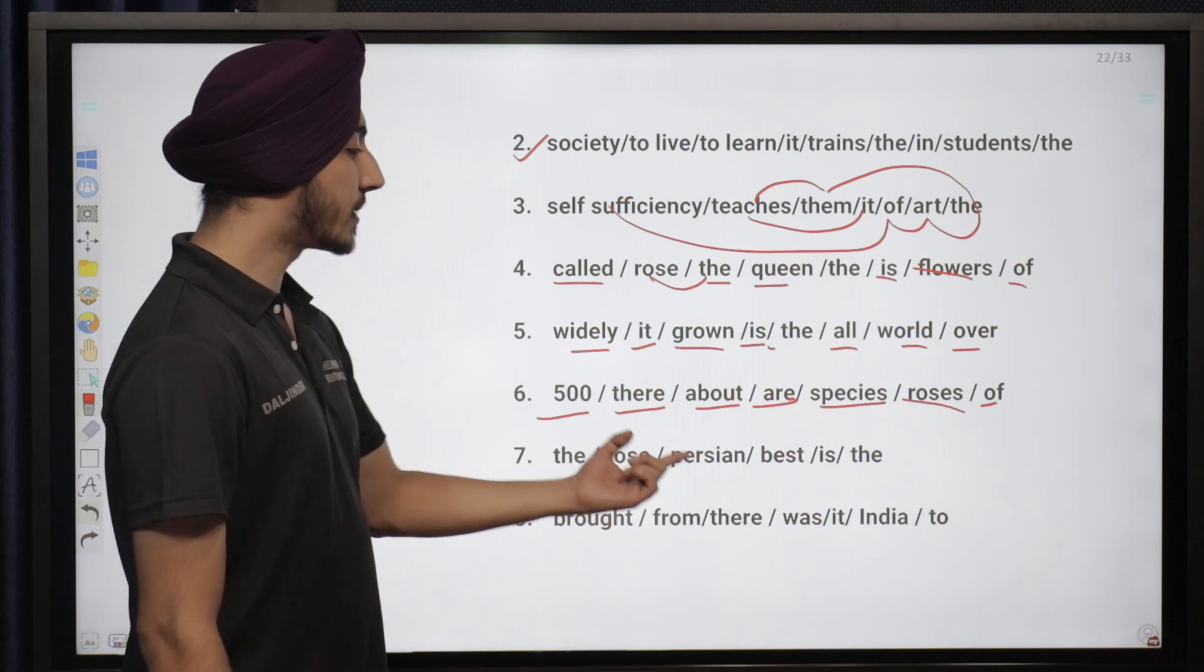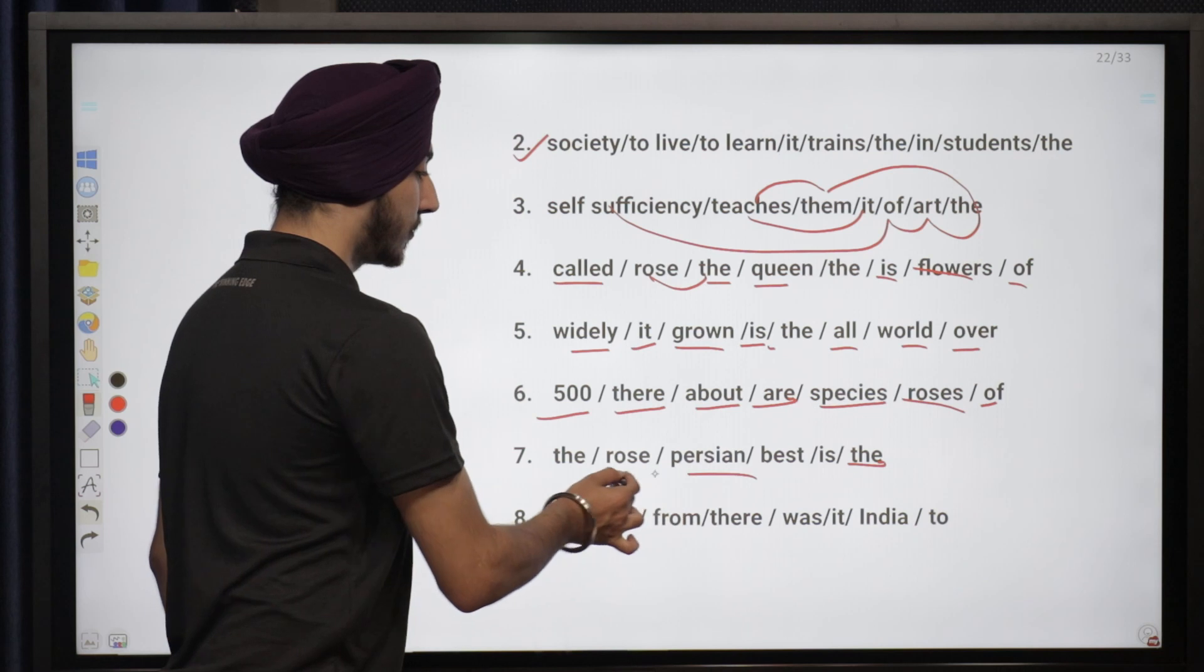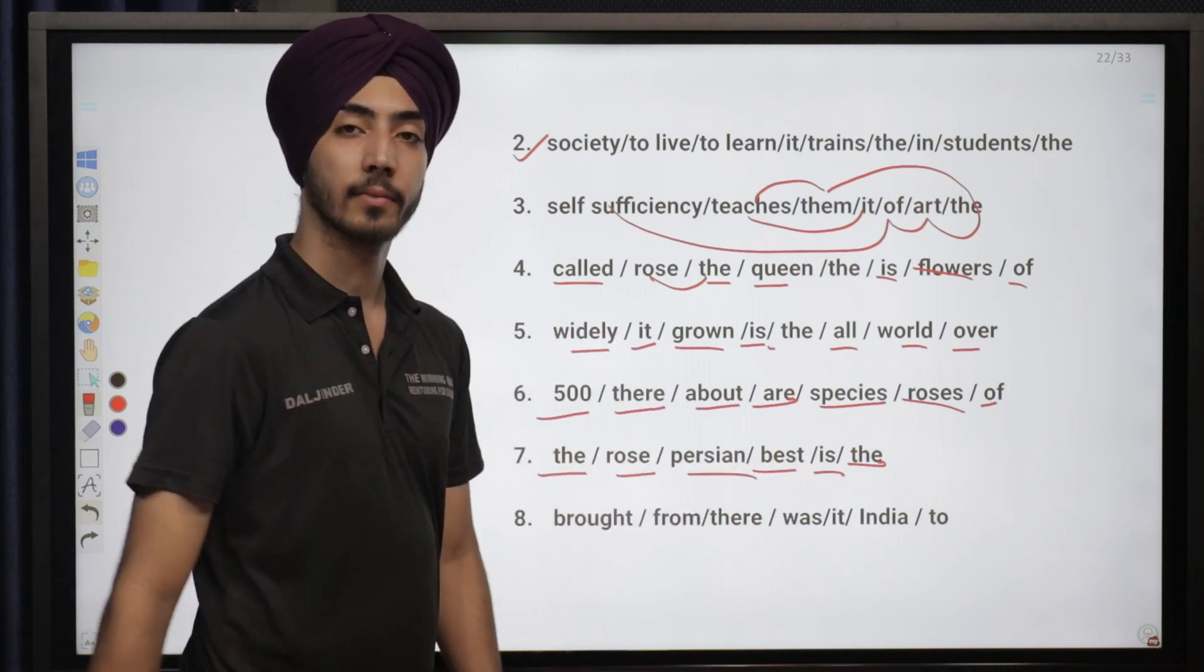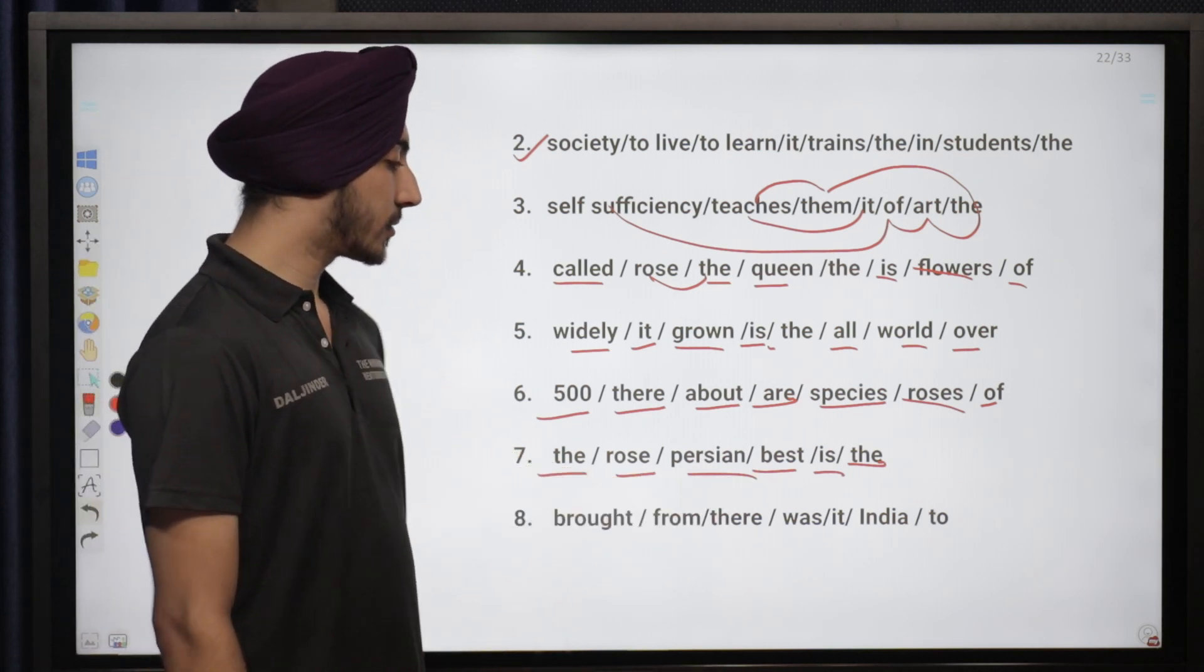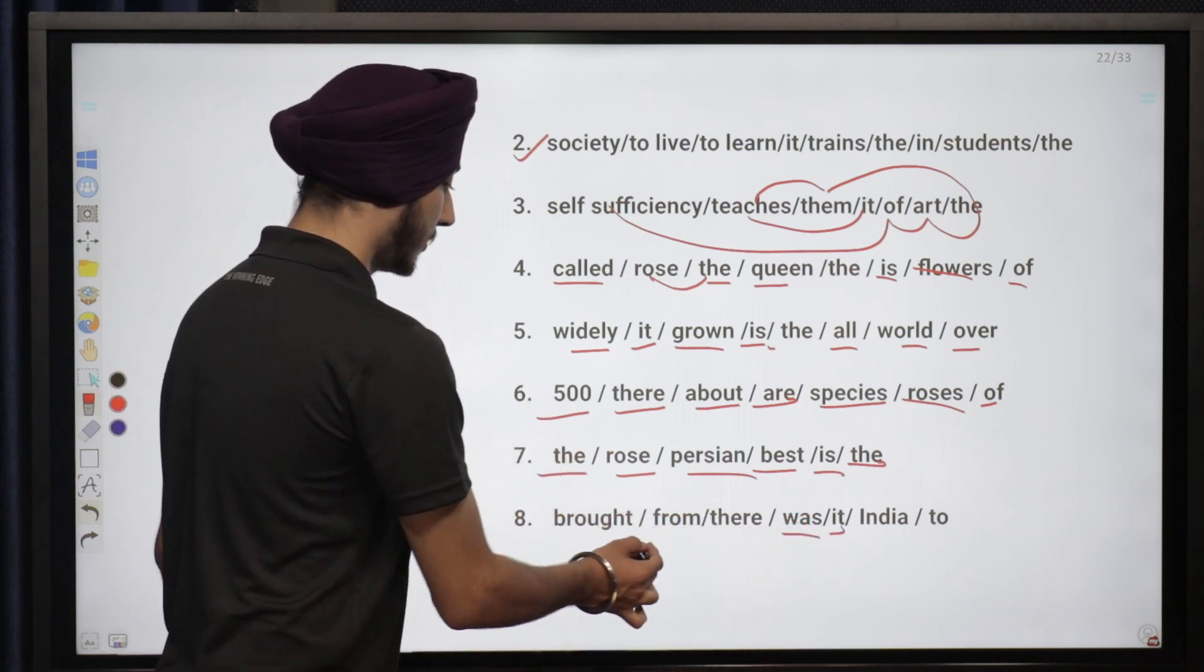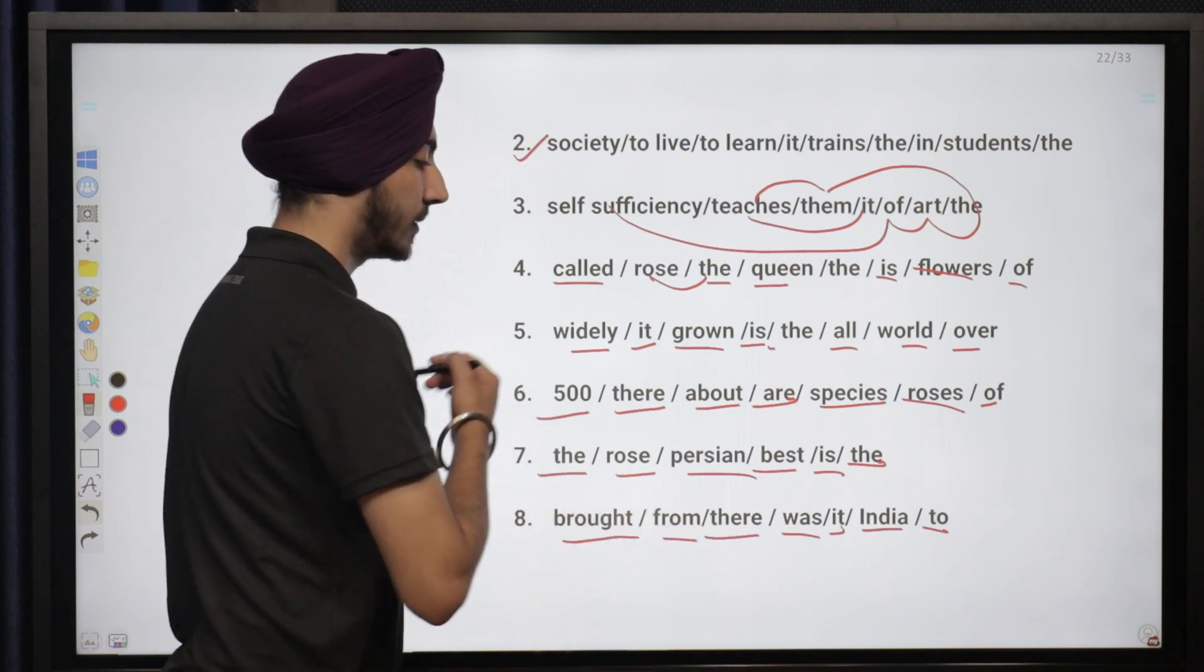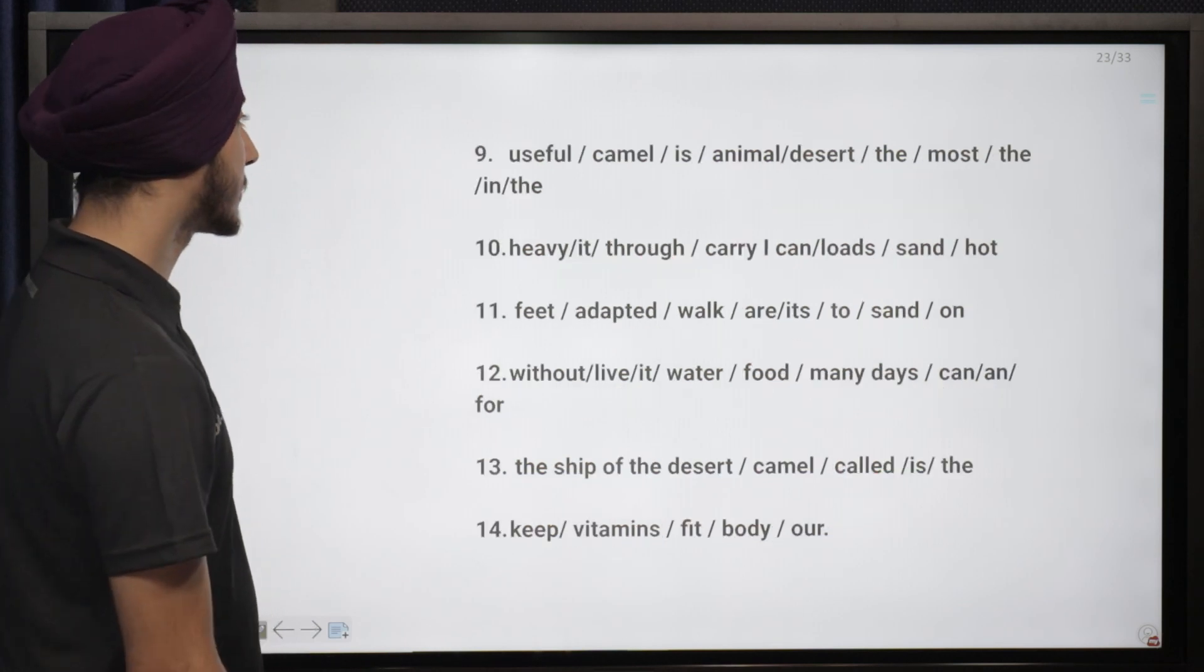Number seven, let's look at the rose persian best is the. The Persian rose is the best. Brought from there was it India to. What can we form of this? It was brought to India from there. Let's look at the next set of sentences.